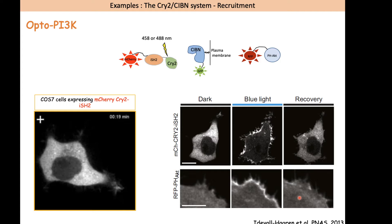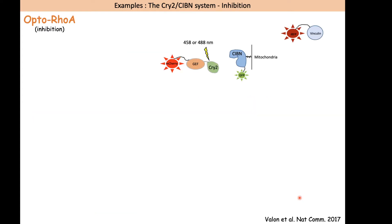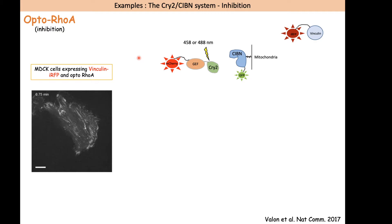You can use the same system to inhibit a protein — for example, by sequestering its activators far away from the site of activation. This is the strategy used to control RhoA activity. Here, CIBN was anchored to the mitochondria, and CRY2 was fused to a GEF — an activator of RhoA — along with mCherry. When activated with light, the CRY2-GEF construct is recruited to the mitochondria, far away from the plasma membrane, which is the normal site of RhoA activation.